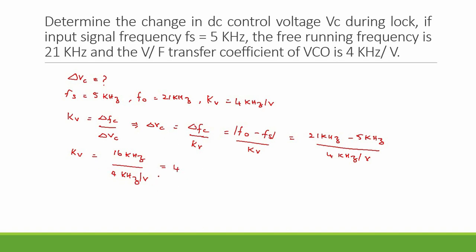Kilohertz and kilohertz will get cancelled and we have 4 volts. This is not actually Kv, this is actually del Vc. So change in control voltage required for us is 4 volts.